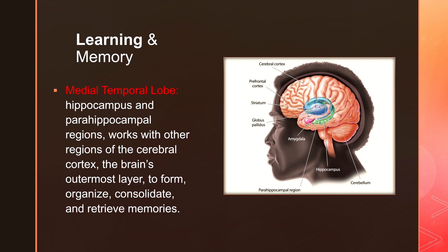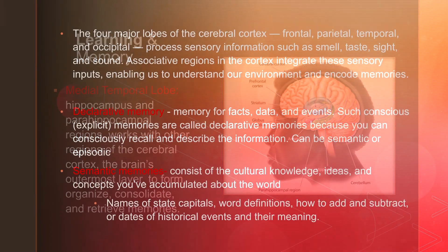Your amygdala largely processes fear. Whenever you're scared of something, that memory will be ingrained in your brain because of the large amount of emotion associated with it. Think about something that scared you a lot as a kid or recently that you can't forget. That's a pretty easy concept to grasp.